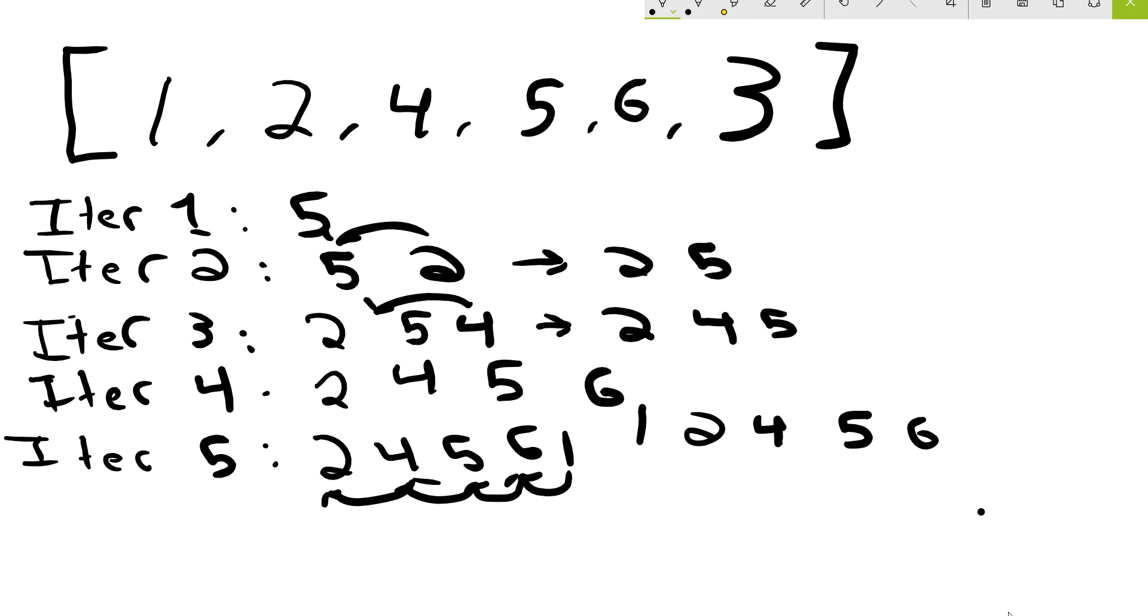Finally, on the last iteration, iteration 6, we are looking at the whole array. So we're looking at 1, 2, 4, 5, 6, 3.